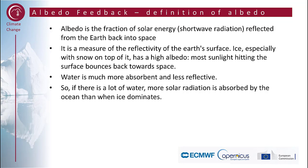An important feedback is the albedo feedback. Albedo is the fraction of solar energy reflected from the Earth back into space — it is a measure of the reflectivity of the Earth's surface. Ice, especially ice with snow on top of it, has a high albedo, so most sunlight hitting the surface bounces back towards space. Water is much more absorptive and less reflective, so if there's a lot of water, more solar radiation is absorbed by the ocean than when ice dominates.